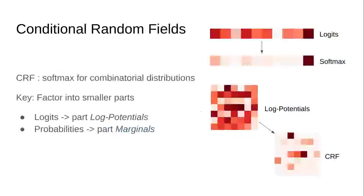Instead, we have to use an approach known as conditional random fields. Conditional random fields are a generalization of softmax for combinatorial distributions. The key simplifying assumption is that instead of having a logit for each possible element of the set, we're going to have a log potential for each part of each element. Instead of computing the probability of every exponential value, we compute the marginal probability of each part. A softmax maps from logits to a single distribution, whereas a conditional random field maps from log potentials to a set of part marginals, or the probability of any given part occurring.